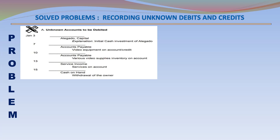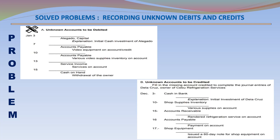Problem B – Unknown accounts to be credited: Fill in the missing accounts credited to complete the journal entries of De La Cruz, owner of Cebu Refrigeration Services. December 3 – Cash in Bank Debit.